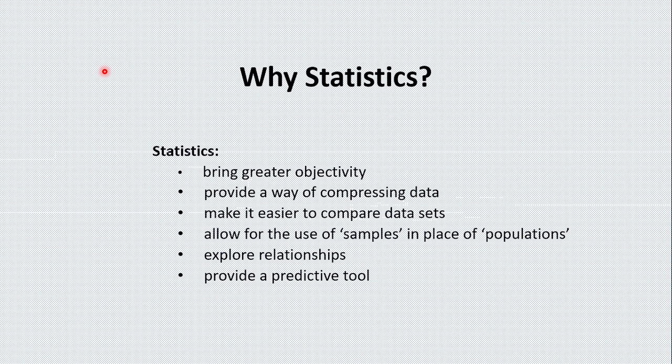Statistics allow us to be more scientific in the conclusions that we make. They bring greater objectivity. Sometimes it's very tempting to say that two or more things that we have counted in our geographical studies are connected. Statistics allow us to test those conclusions. They remove bias from the conclusions that we have drawn.